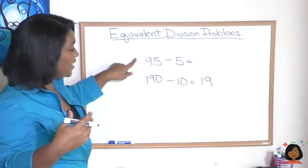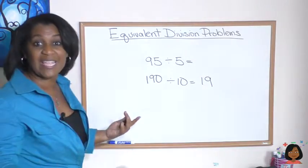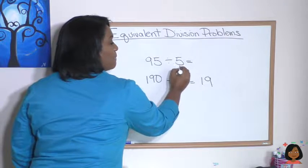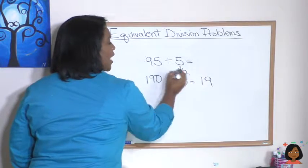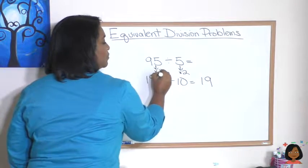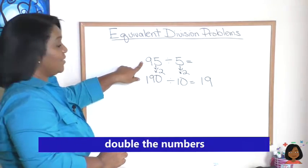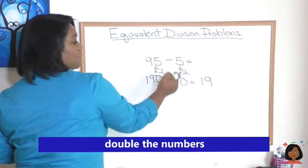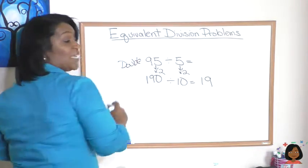Now, the thing is, these two division problems are equal. All I did was I multiplied each number times 2. So, I doubled 95, and I got 190, and I doubled 5, and I got 10. So, I doubled it.